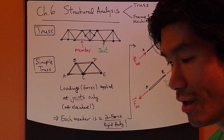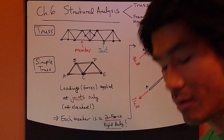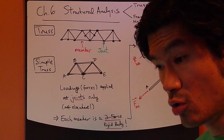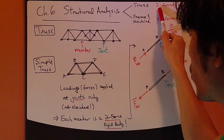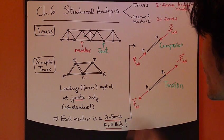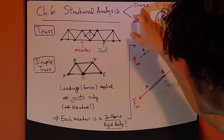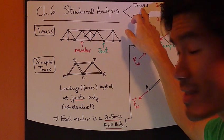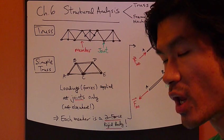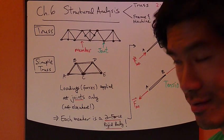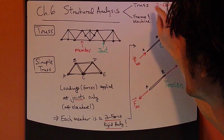If you recall, in the last chapter, we talked about two-force rigid body. Two-force bodies are basically what make up a truss. If a frame or machine, there are three or more forced bodies. We'll talk about this later.